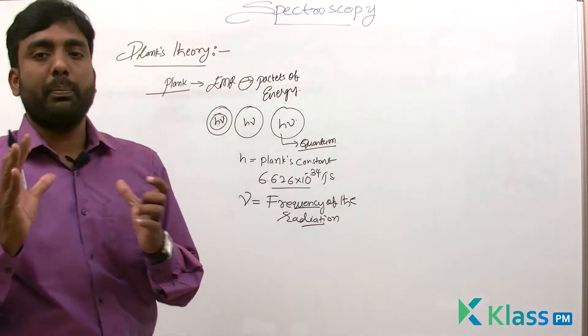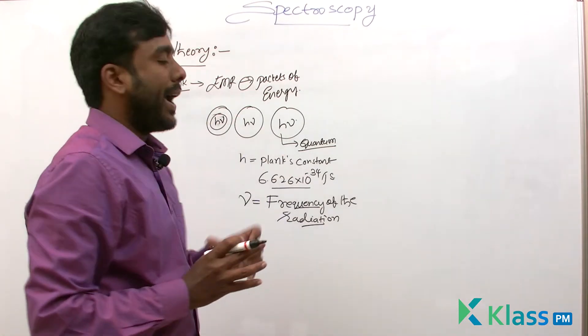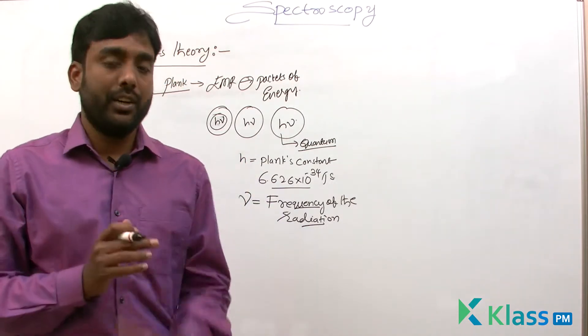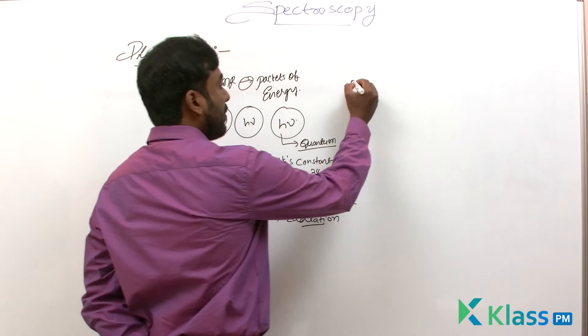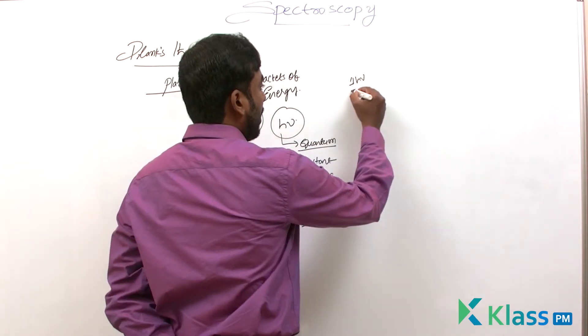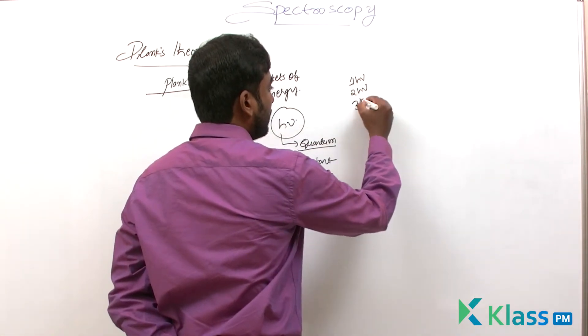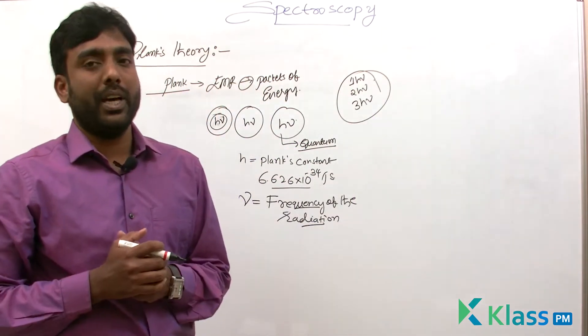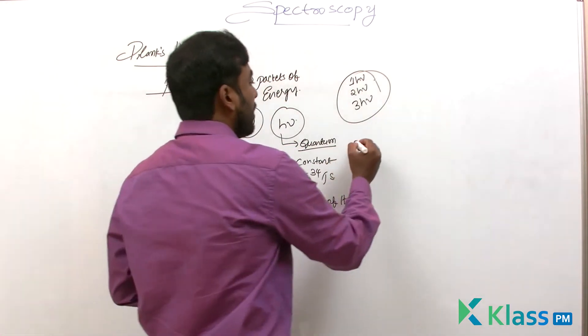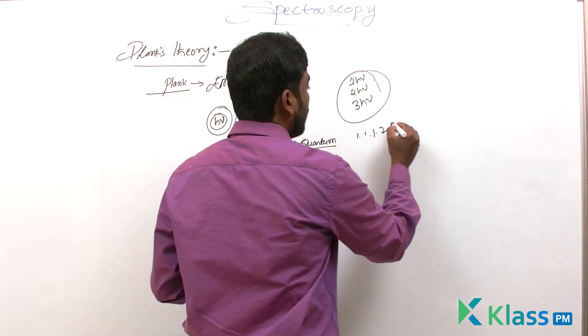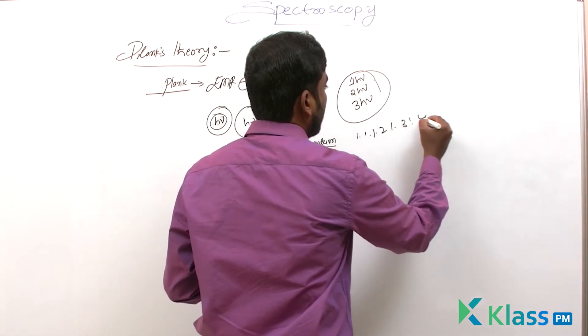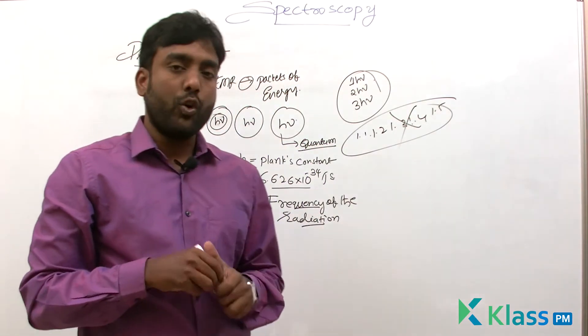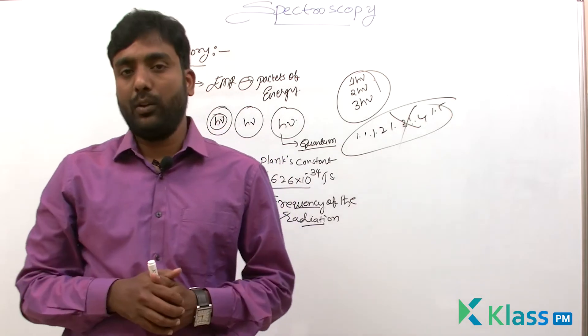So according to Planck, any electromagnetic radiation possesses discrete values as its energies. Like, it will have 1·h·ν energy or 2·h·ν energy or 3·h·ν energy. Like this, discrete values will be there. There are no continuous values like 1.1, 1.2, 1.3, 1.4, 1.5. No, such kind of energies do not occur. Only they have discrete values.